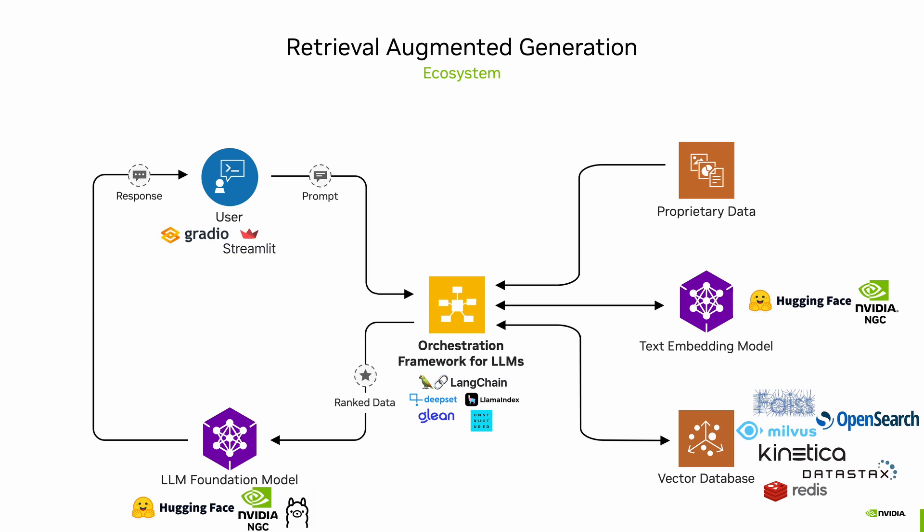Now that we know the workflow and how different components are tied together, the next step is to decide which tools and frameworks to use. There are many open source and enterprise tools out there that one can use to build these applications. For example, for orchestration we have LangChain, LlamaIndex, NeMo, Genie, and various others.